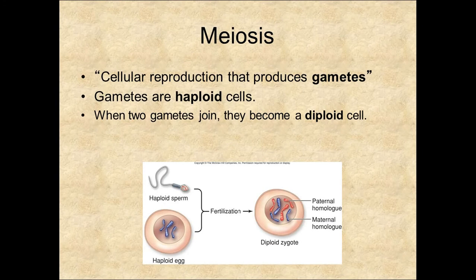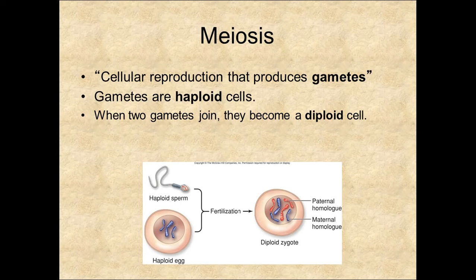Meiosis is the cellular reproduction that produces gametes, or egg and sperm cells. They are not daughter cells. Daughter cells are duplicates of the original. Gametes are different for two reasons. First, we're going to have genetic recombination, the exchange of genetic material, which makes the DNA different from the original. And second, gametes are haploid — they only have one of each chromosome, since they only come from one parent. When the two gametes join, called fertilization, they will become a diploid cell called a zygote.